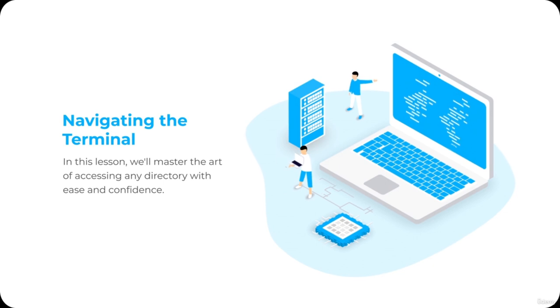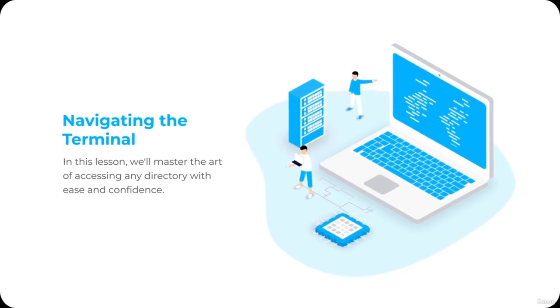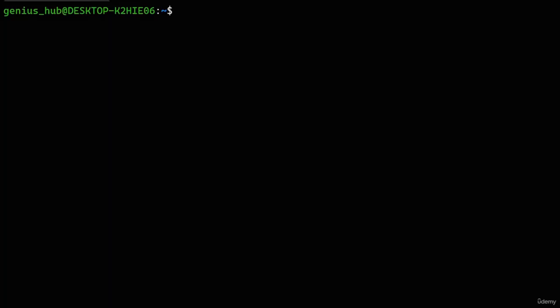Welcome to this lesson on navigating the Linux terminal. Today, we'll master the art of accessing any directory with ease and confidence. In our previous lesson, we discovered that the terminal is always focused on a specific directory, allowing us to effortlessly interact with the files it contains. By default, this is our user's home directory. But what if we want to view or interact with files in another directory? No worries — with a simple command, we can navigate our terminal to any directory we want.